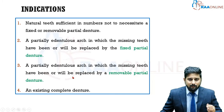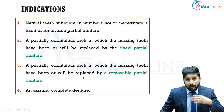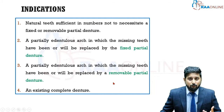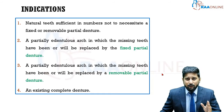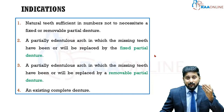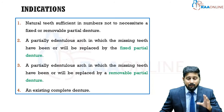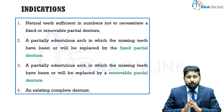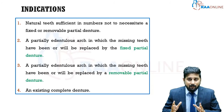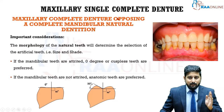Third, similarly, you have a partially edentulous situation in the opposing arch where you are planning to replace the missing teeth using a removable partial denture, or it has already been replaced, or it can be an existing complete denture. However, when a single complete denture is already present and you need to replace the opposing natural dentition, it is always better to replace both dentures together as a conventional complete denture set, giving you total control over aesthetics, function, and stability.